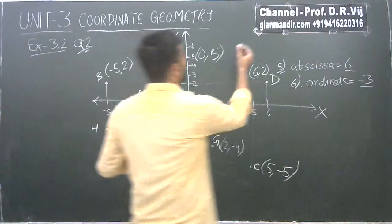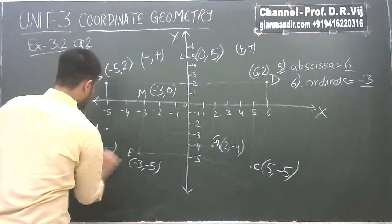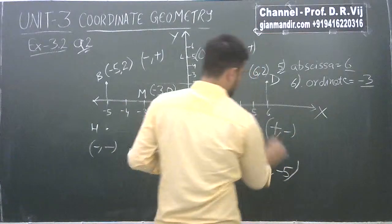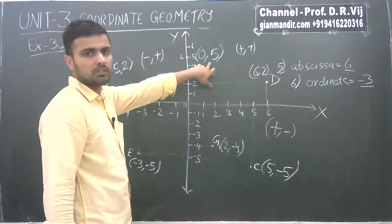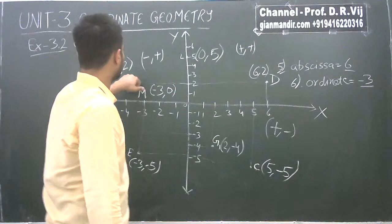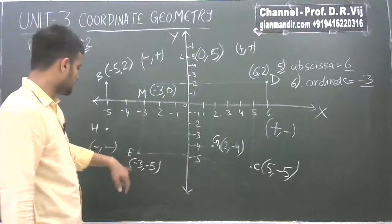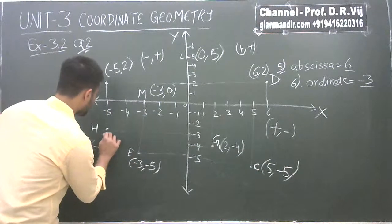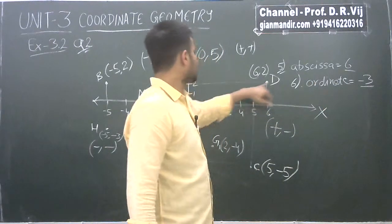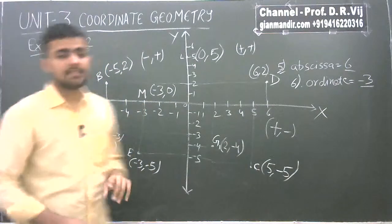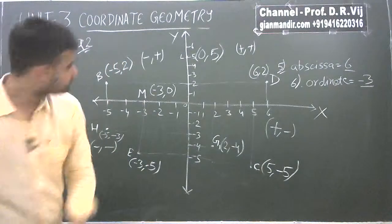We can also verify our answers. The first quadrant is always positive, positive. The second quadrant is negative, positive. The third quadrant is negative, negative. The fourth quadrant is positive, negative. L is on the Y axis so its abscissa is 0. H is at (-5, -3), which is negative, negative — third quadrant. E is also negative, negative. With this we have completed Exercise 3.2. Now we will start with Exercise 3.3.